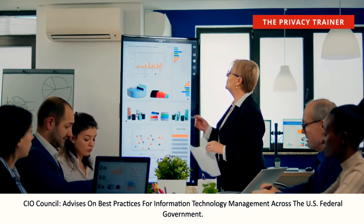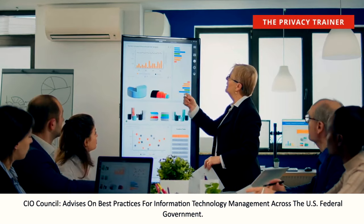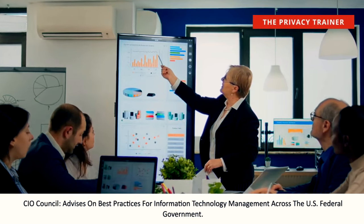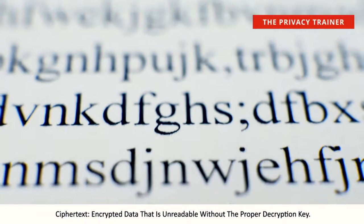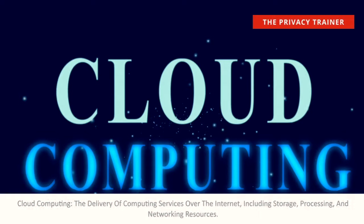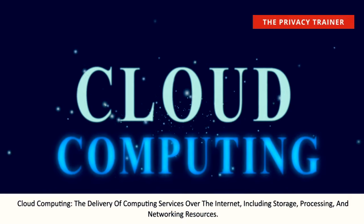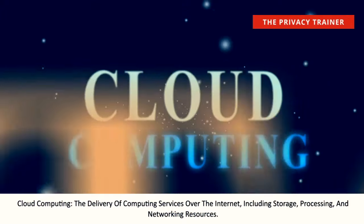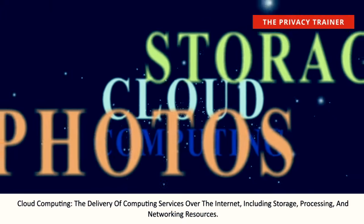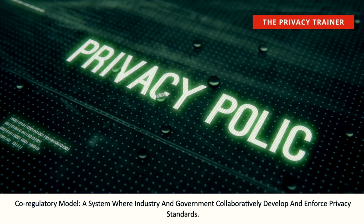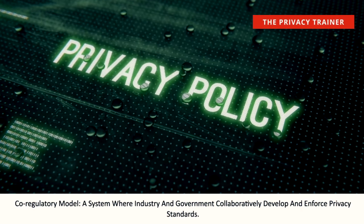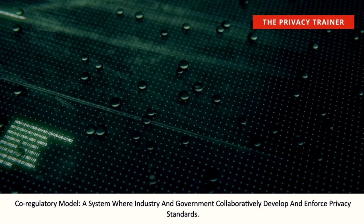CIO Council. Advises on best practices for information technology management across the US federal government. Cipher text. Encrypted data that is unreadable without the proper decryption key. Cloud computing. The delivery of computing services over the internet, including storage, processing, and networking resources. Co-regulatory model. A system where industry and government collaboratively develop and enforce privacy standards.